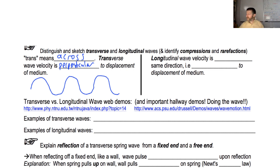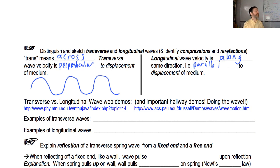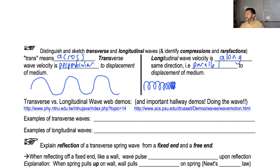Longitudinal wave velocity is along the same direction — that is, parallel to the displacement. The mnemonic is 'longitudinal: along the same direction, i.e., parallel to displacement.' This is harder to draw. What I'll draw is a part of the wave that is normal, then a part that is all scrunched up together, then a part that is all spread out, then scrunched again, and spread out again.